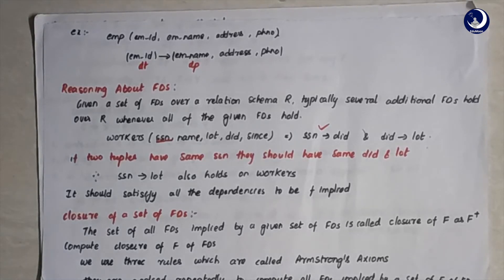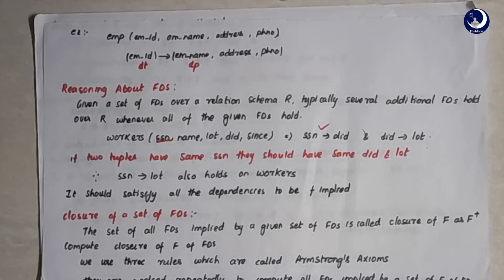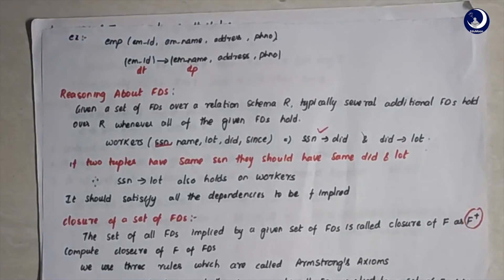You can never say a particular table has only one functional dependency — there is no such thing. There can be a set of functional dependencies, and a particular FD holds on an instance only if all FDs are satisfied. The set of all functional dependencies implied by a given set of FDs is called the closure of FD, denoted as F+.